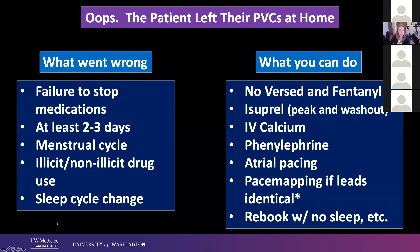Underestimating the menstrual cycle components — and if you've done longer-term monitoring, that may help you get a hint of that. Illicit and non-illicit drug use: I practice in Washington State, and it's not infrequent that my patients use marijuana before procedures because they are nervous. And that tends to make PVCs go away. We don't know if it's a therapy for PVCs long-term because we're really not privy to very much investigational data on this.